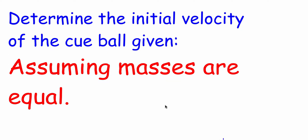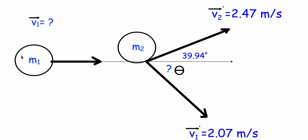All right, so in this example we're going to be looking at a collision in 2D with billiard balls and we're going to start off by assuming that the masses of the billiard balls are equal. Here are the initial conditions. The cue ball is coming in with an unknown velocity, hits a billiard ball.